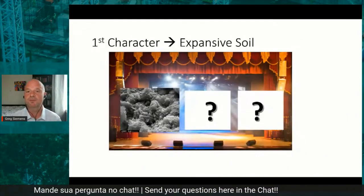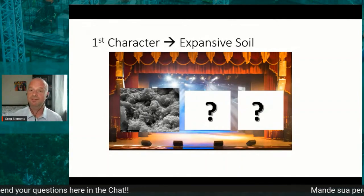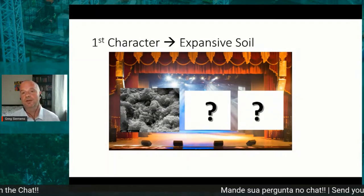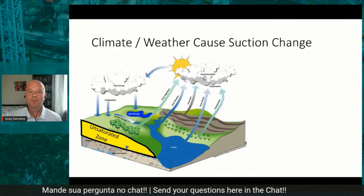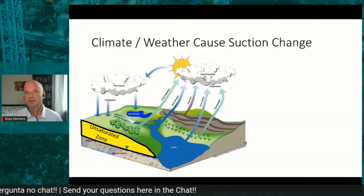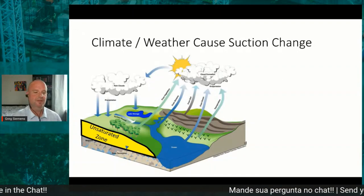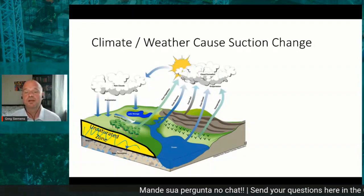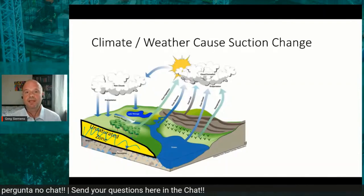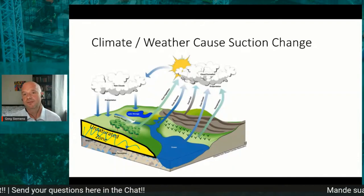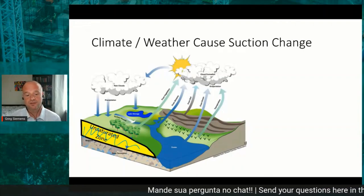The first character of our play is that we must have an expansive soil. What else do we need to account for? That is climate. Climate and weather cause suction changes, and problems happen when moisture content changes due to suction change. This occurs in the near-surface unsaturated zone where we get wetting, drying, rainfall, infiltration, evaporation, transpiration, and cyclic — either seasonal, annual, or even daily — moisture or suction cycles, leading to changes in the near-surface environment.